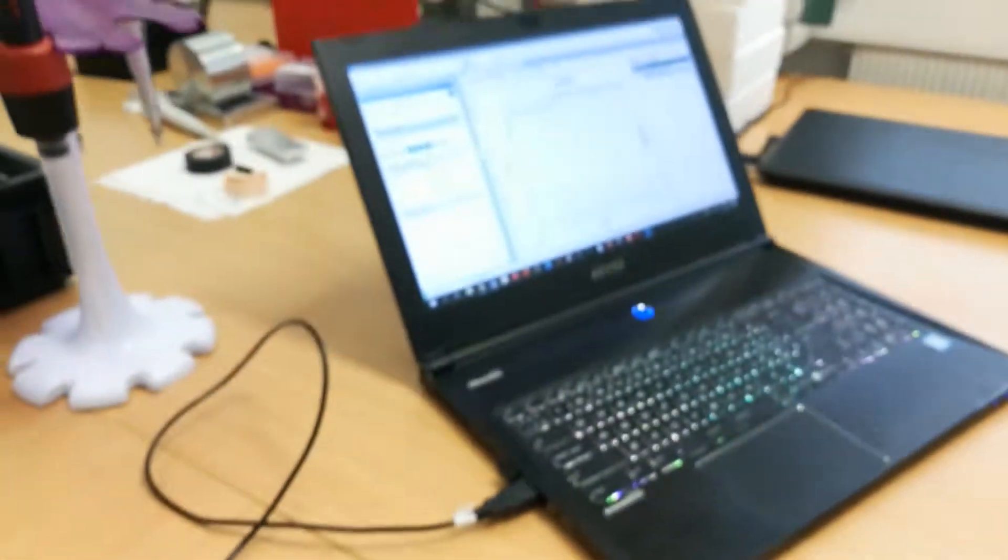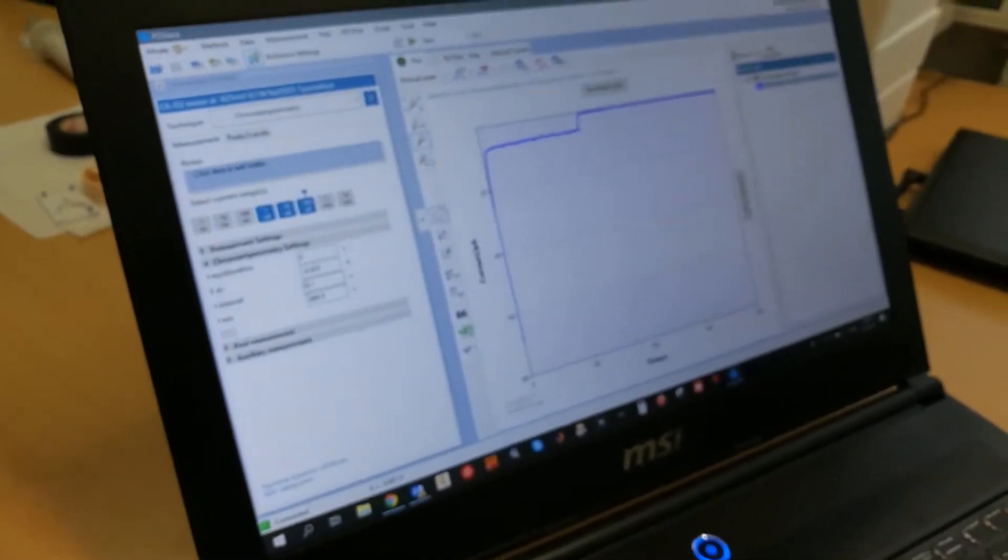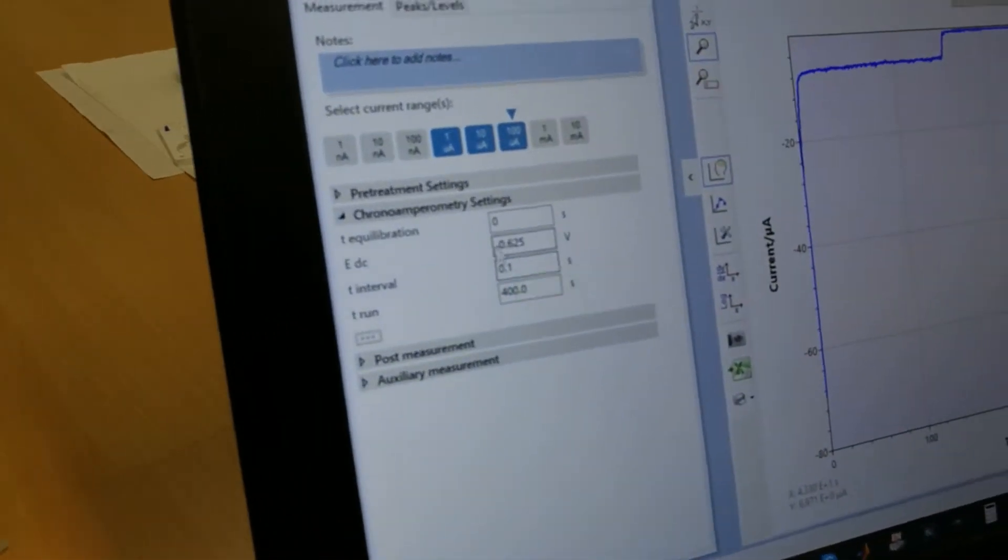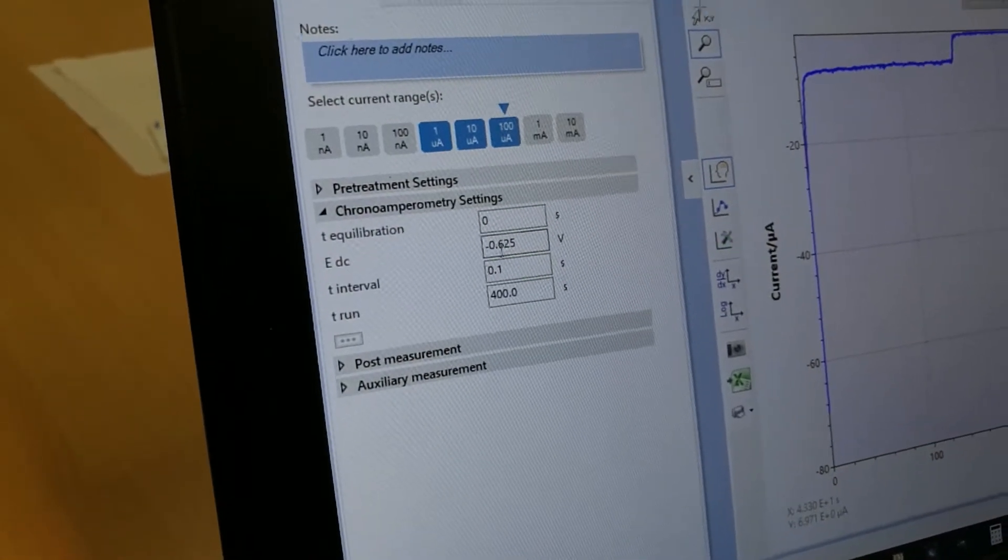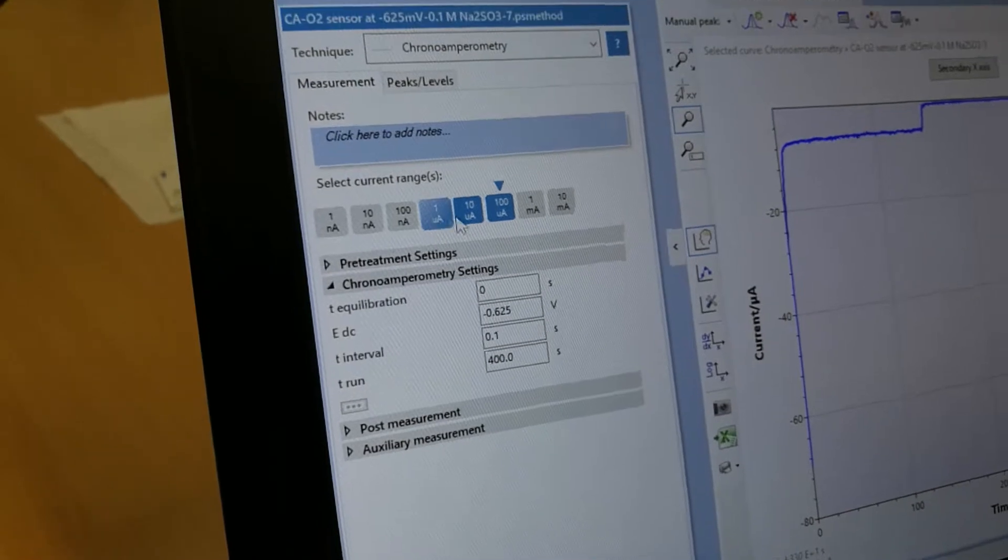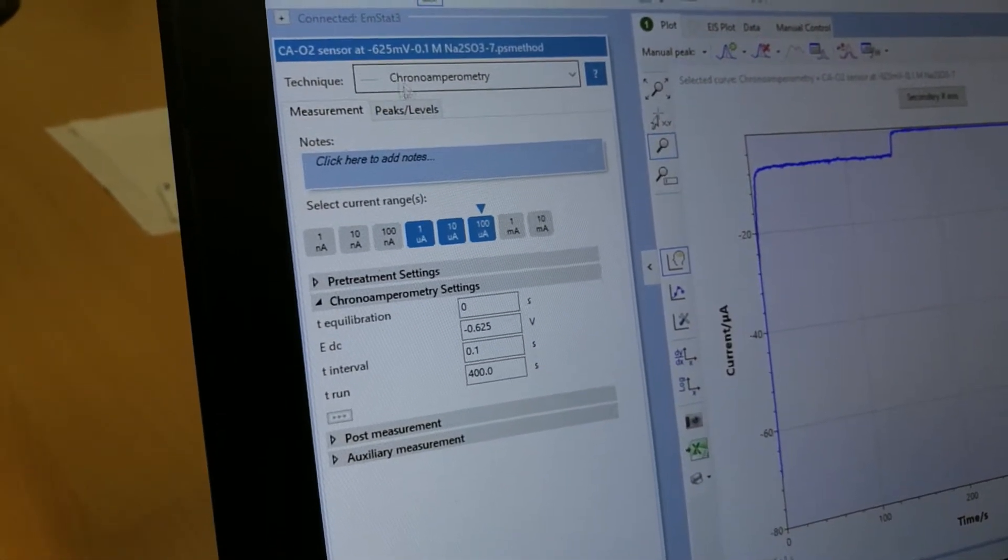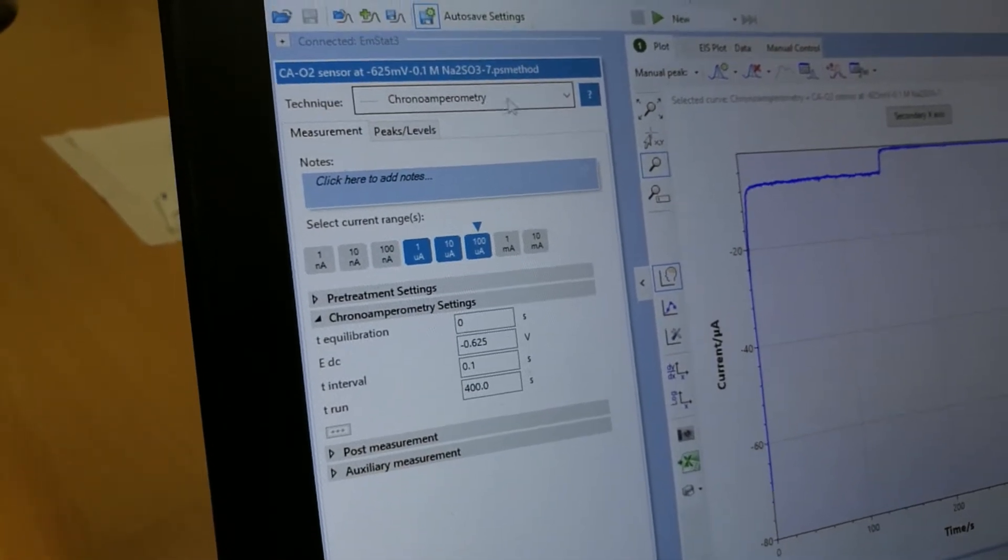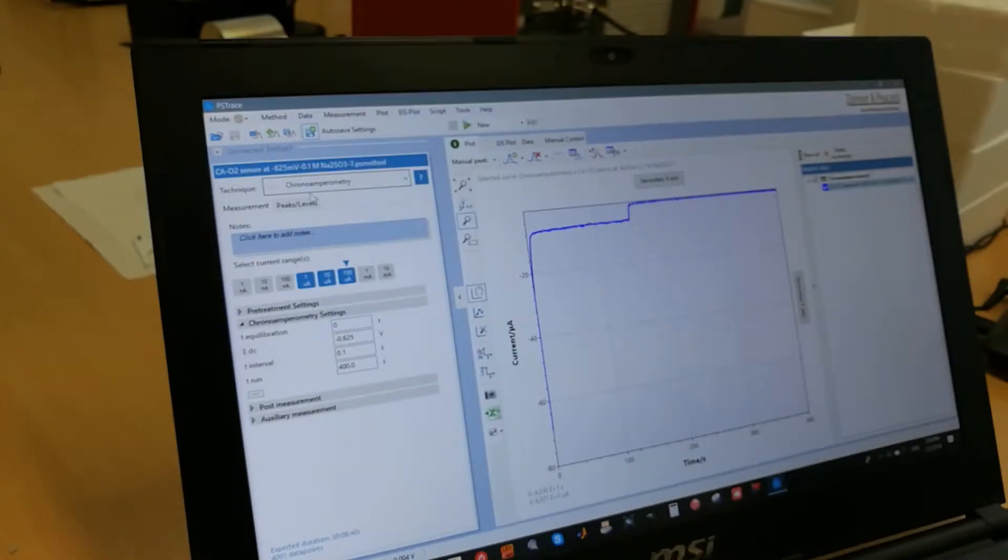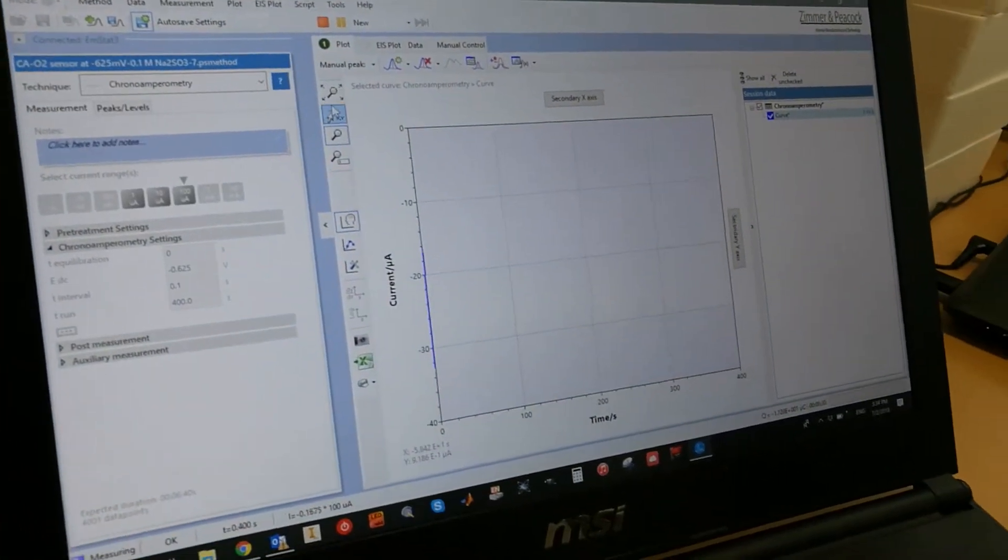So I just dropped 50 microliters of PBS solution and I'm going to start running my measurement. In this case, only for 400 seconds with a sampling interval of 0.1 seconds and a potential of minus 625 millivolts, 1 microamp to 100 microamps of current range. This is a chronoamperometry measurement. So here I'm going to press play and now my measurement started.